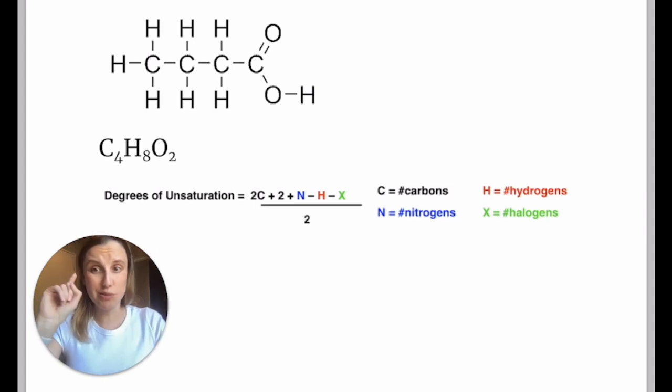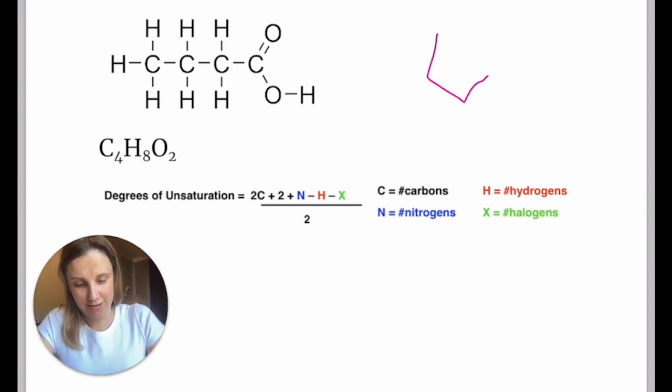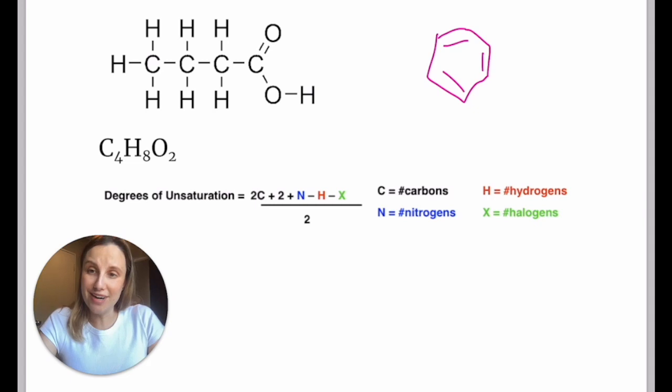So for every double bond, that's one degree. If it's a triple bond, that's two degrees. If you've got a ring, then that's one degree. If you've got a benzene ring, then that's four degrees because in a benzene ring you have one, two, three - it's kind of like three double bonds-ish and a ring, so you've got four overall.